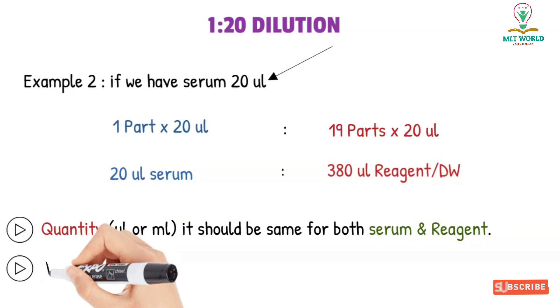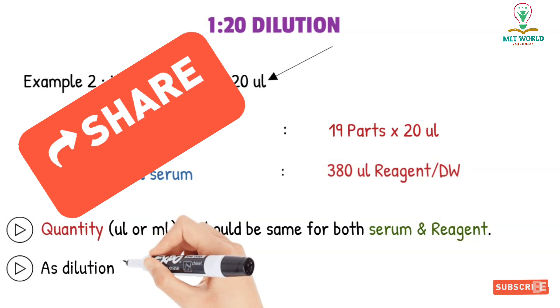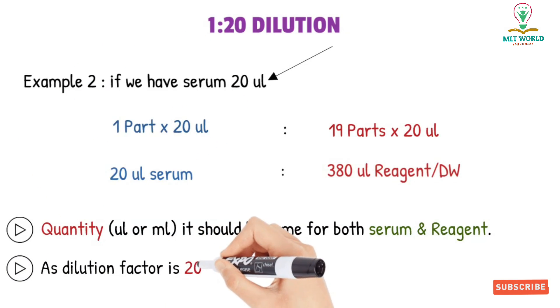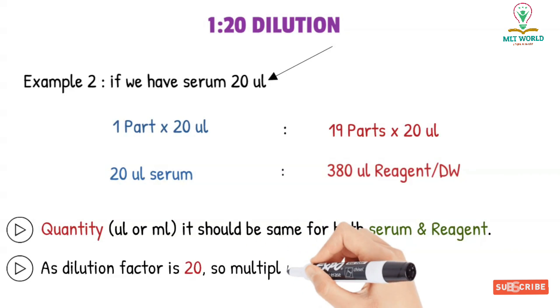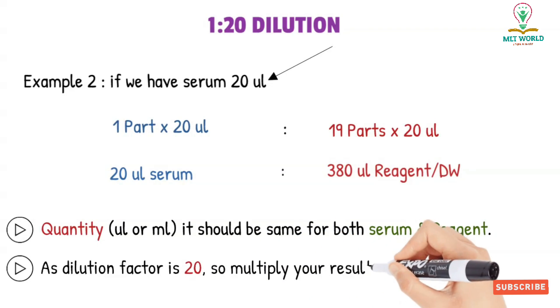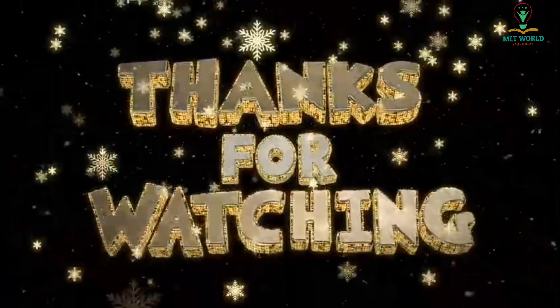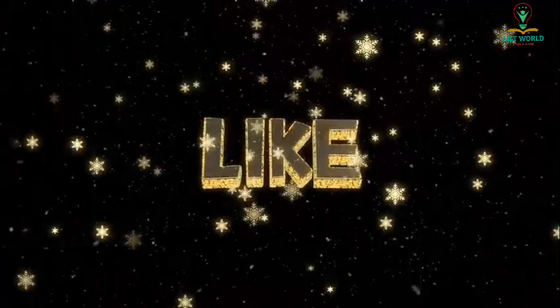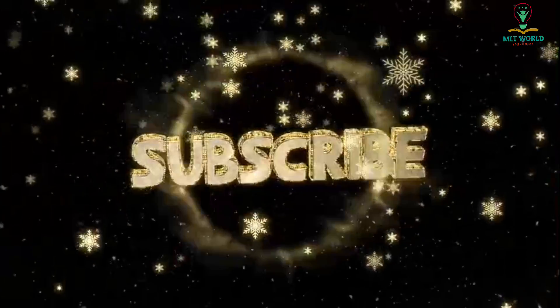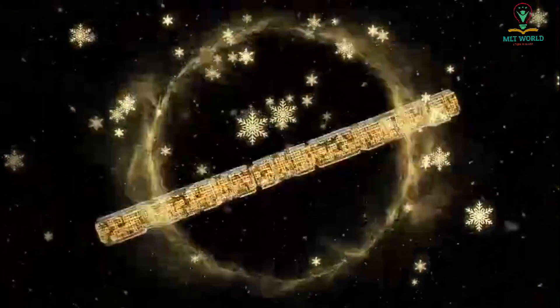And the second point is that whatever dilution we will use, at the end our result will be multiplied with 20—that is the factor. So whatever result will come for the test, that result we will multiply with 20 and then we will get the final result. So in this quick video, I hope you understand how to make 1:20 dilution.